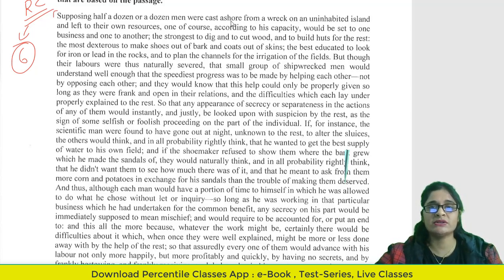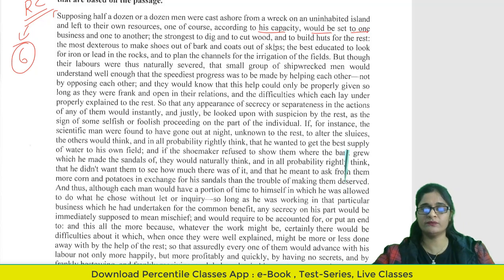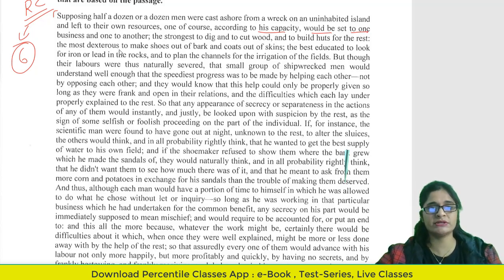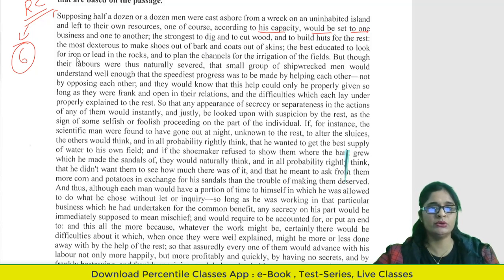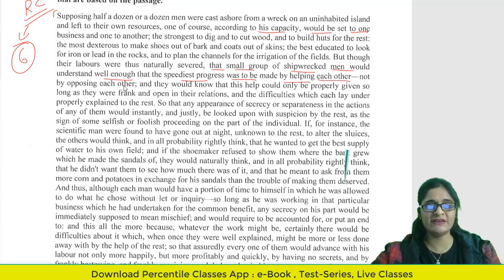The RC passage reads: 'Supposing half a dozen or a dozen men were cast ashore from a wreck on an uninhabited island and left to their own resources. One, of course, according to his capacity, would be set to one business and one to another — the strongest to dig and cut wood to build a hut for the rest, the most dexterous to make shoes out of bark and coats out of skin, the best educated to look for iron and lead in the rocks and to plan the channel for irrigation of the field.'